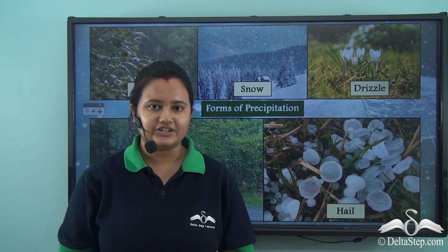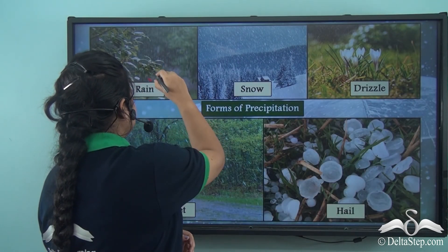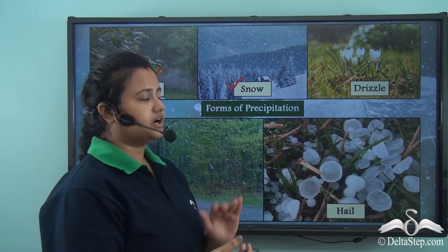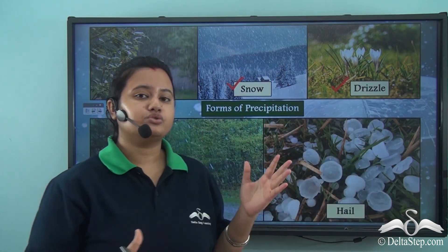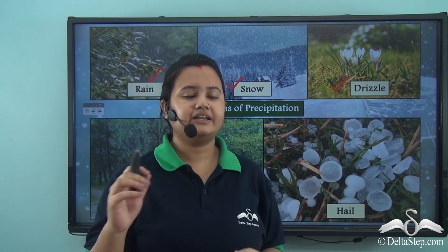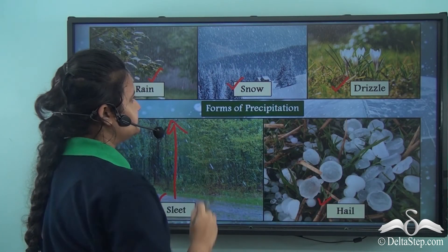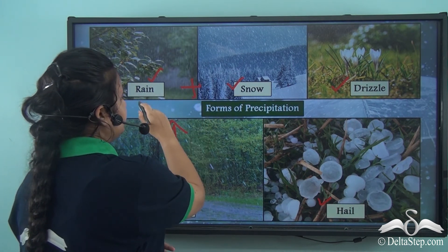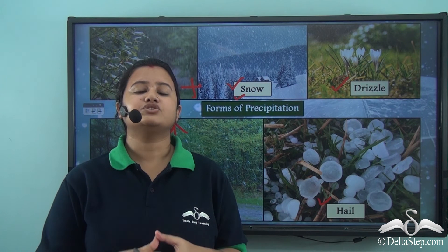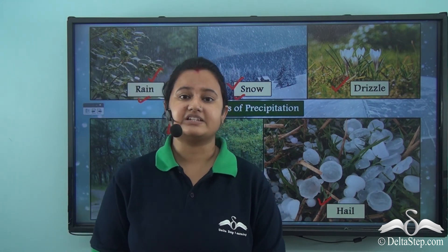In today's video we discussed about different forms of precipitation. The most common form is rain. Another common form is snow, usually experienced in cold countries. Drizzle is very similar to rain — the only difference is that the water drops in drizzle are very tiny. Other forms of precipitation are sleet and hail. Sleet is a combination of rain and snow. Hail is usually accompanied by a thunderstorm and can be dangerous if the hailstones are very large.